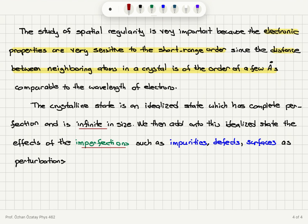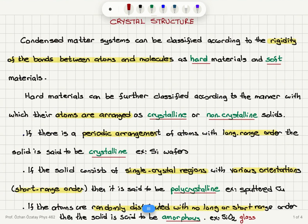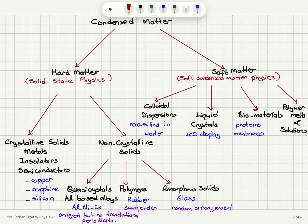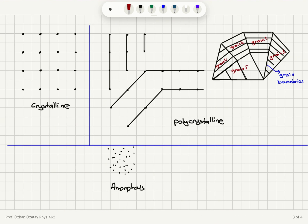This is our strategy throughout this course. In summary, we classify materials as hard and soft. Hard materials are the subject of solid-state physics. The structure of materials is classified as crystalline and non-crystalline; non-crystalline ones can be polycrystalline or amorphous. The type of order is important because it ultimately determines the electronic properties of the material. Condensed matter physics is the broader view, encompassing both solid-state physics and soft condensed matter physics, but the subject of this course is solid-state physics.